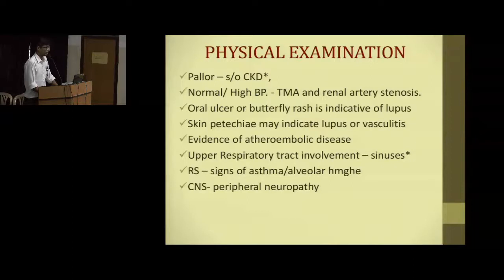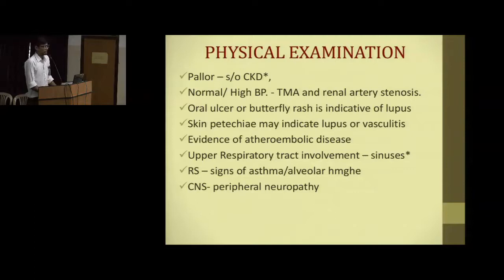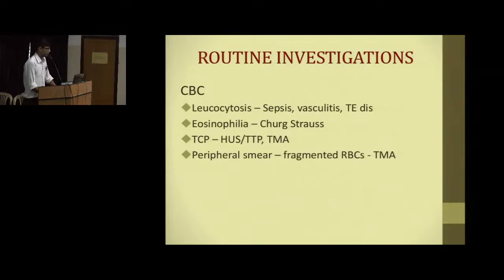On examination, pallor can suggest CKD. Normal or high blood pressure may suggest thrombotic microangiopathy or renal artery stenosis. Rash or oral ulcers suggest SLE. Skin petechiae can suggest vasculitis. Upper airway involvement could suggest Wegener's granulomatosis. On routine investigations, leukocytosis will be present in sepsis, vasculitis, or thromboembolic disease. Eosinophilia correlates with Churg-Strauss syndrome.